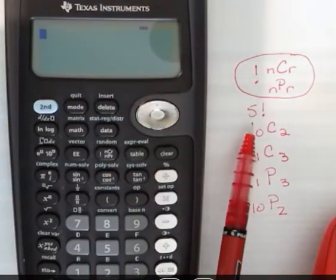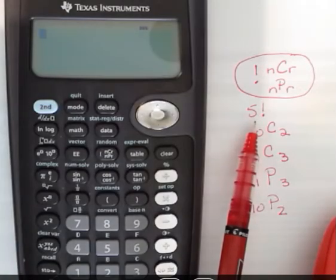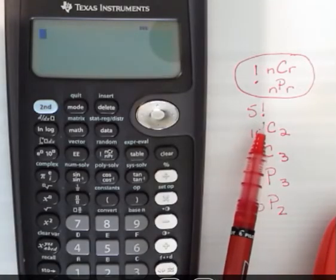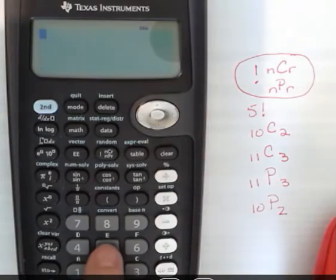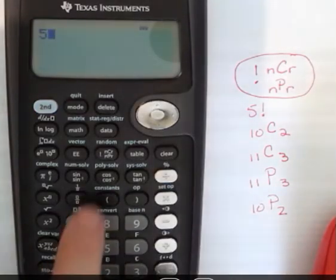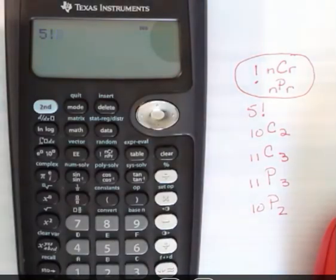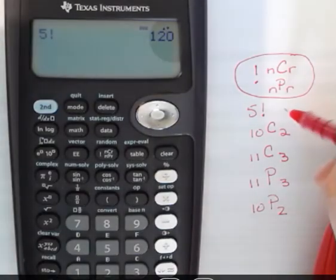So a factorial means you're going to multiply something. 5 factorial means 5 times 4 times 3 times 2 times 1. So if I wanted to do 5 factorial, I'd press the 5, and then I would just press that button, and the first thing that comes up is the factorial, and then I would just hit enter. And that's going to be 120.